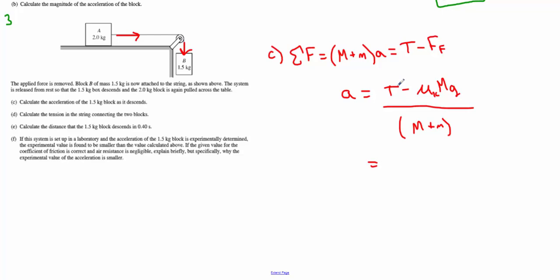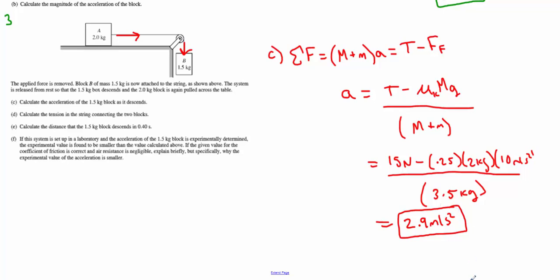My acceleration is going to be tension minus, the friction force is still mu sub k big M g, because that's the thing experiencing the friction. This little block hanging is not experiencing friction. All of that divided by the quantity of the two masses, big M plus little M. The tension, as I already said, is equal to the weight of the little block, little M g. So I'm just going to write that in as 15 newtons, 1.5 times 10. So I have 15 newtons minus 0.25 times 2 kilograms times 10 meters per second squared, and this entire quantity divided by 2 plus 1.5 or 3.5 kilograms. Typing it into my calculator, I'm going to get a value of 2.86. I'll just round that to 2.9 meters per second squared. If you use 9.81 for gravity, you'd get a slightly lower number. And that whole thing was worth 4 points.